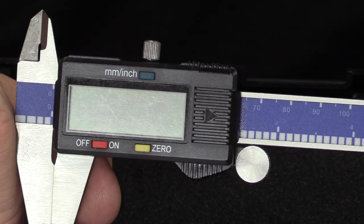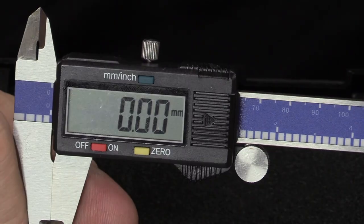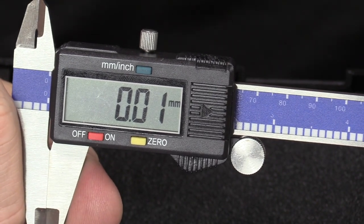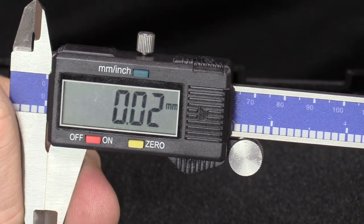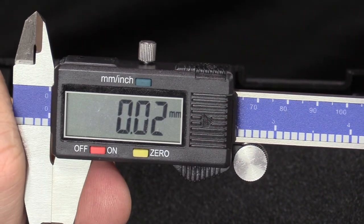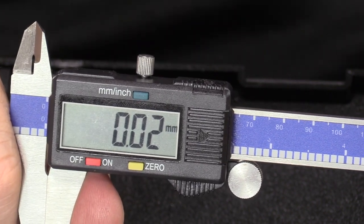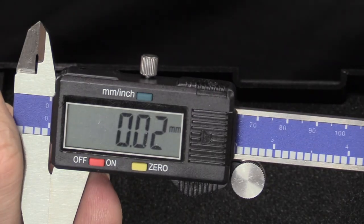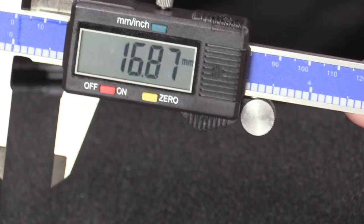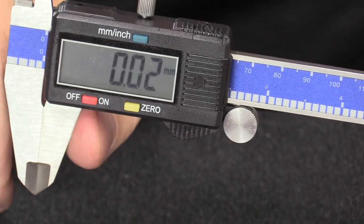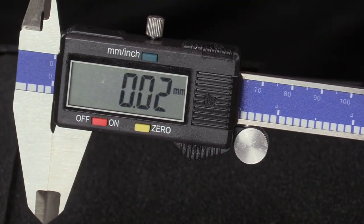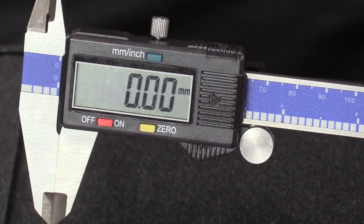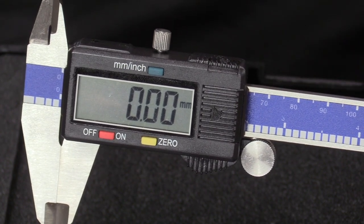This digital caliper has an on-off button right here, the red button. Just hit that to turn it on. It does have an automatic shut-off feature, but in my class to preserve battery life, please turn it off when you're done using it. The battery is under this cover right here and just takes a small hearing aid battery. When the caliper itself is closed all the way, if it does not read zero, then there's a zero button, this yellow button right here, to zero the digital caliper.